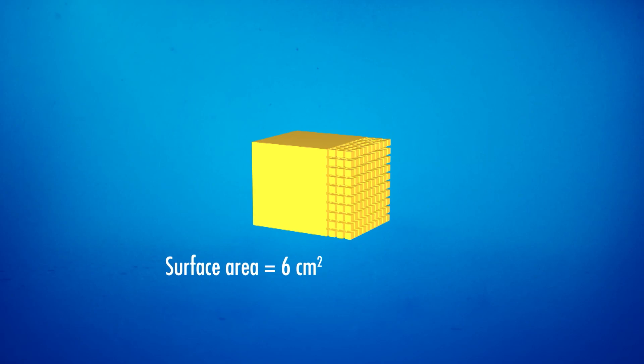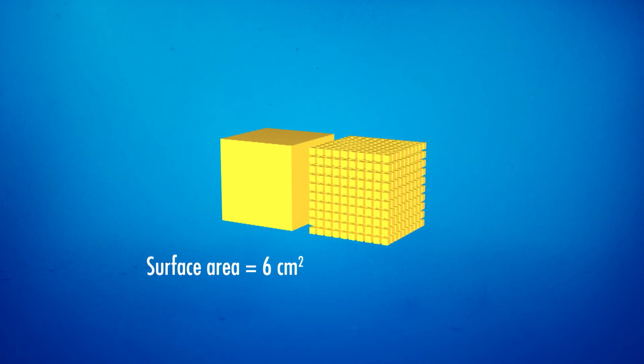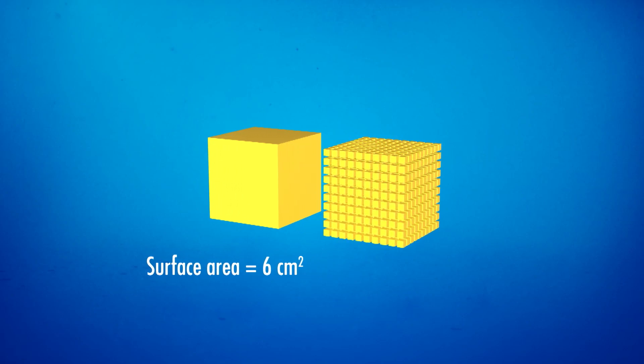Now, let's keep the volume the same, but divide that cube ten times along each side into one millimeter-sized cubes. Then the surface area is 60 square centimeters.